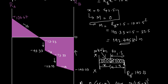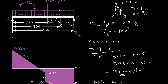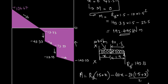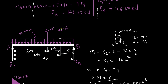We stopped after two sections in the previous video. We took the first section between point B and the 40 kN load, and then the second section between the point load of 40 kN and the point load of 30 kN.